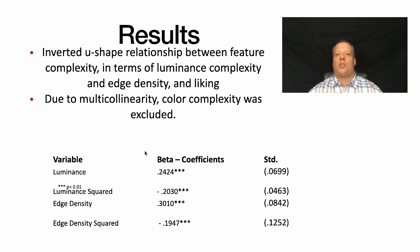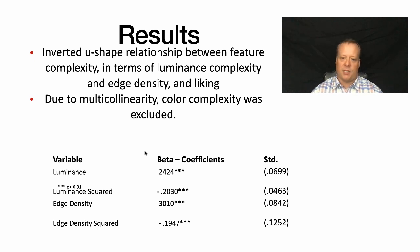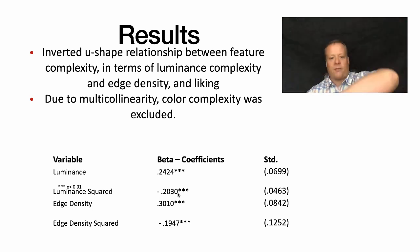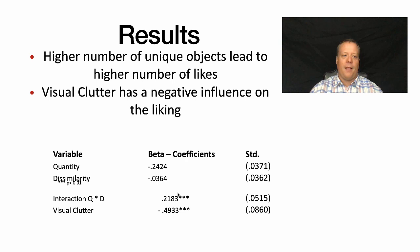We found an inverted U-shaped relationship between feature complexity — specifically luminance complexity and edge density — and liking. Color complexity yielded very similar results to luminance. We know it's an inverted U because the first variable has a positive beta coefficient but the squared term is negative, meaning it's increasing at a decreasing rate. A higher number of objects in terms of design complexity led to more likes, and visual clutter actually has a negative influence on liking.